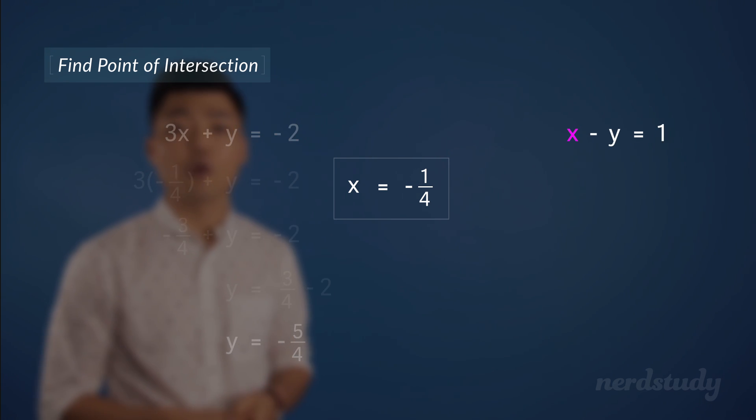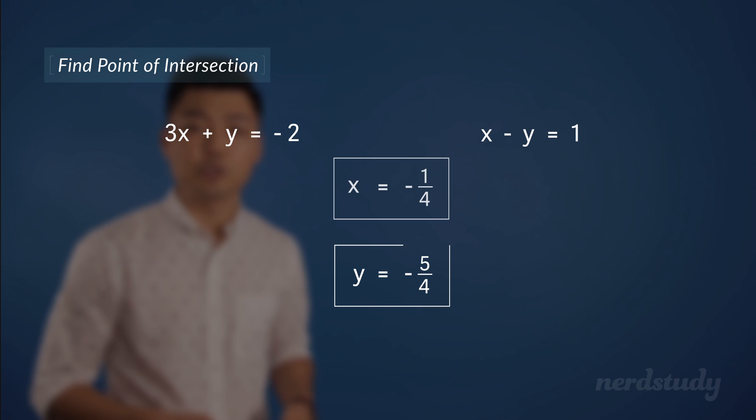Plugging negative one over four for x gives us the following. Let's add one over four to both sides to get negative y equals one plus one over four. We know that that's the same as negative y equals five over four. And of course, if we multiply both sides by negative one, we get y equals negative five over four. So it looks like the two y values are the same, meaning that we found our solution.